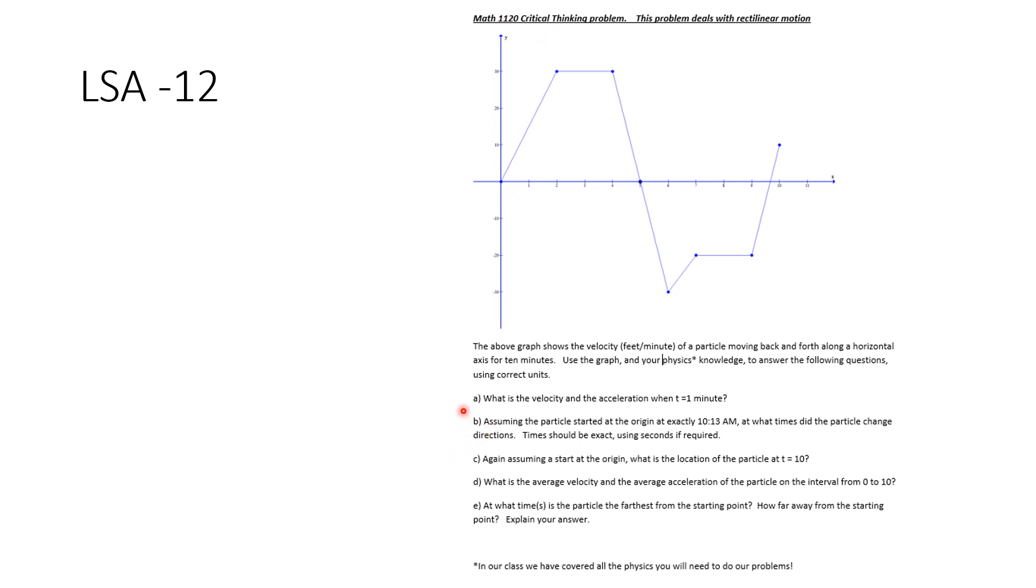So I ask, what is the velocity and the acceleration at time t equal 1 minute? Assume the particle started at 0, 0. And I didn't tell you that, but I'm telling you it now. At exactly 10:13 a.m. At what times does the particle change direction? Times should be exact and use seconds if required. Again, assuming you start at 0, 0. What is the location of the particle at time t equal 10? D, what is the average velocity and the average acceleration of the particle on the interval from 0 to 10 minutes? At what time, or perhaps times, is a particle farthest from its starting point? How far away from the starting point is it at that time? And you explain your answer. This is LSA 12.